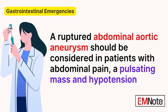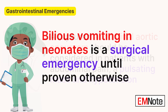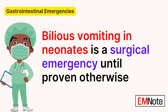A ruptured abdominal aortic aneurysm should be considered in patients with abdominal pain, a pulsating mass, and hypotension. Bilious vomiting in neonates is a surgical emergency until proven otherwise.